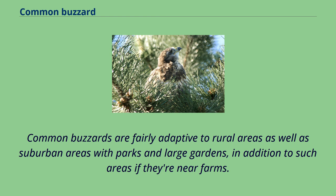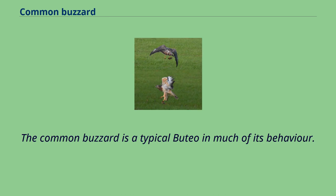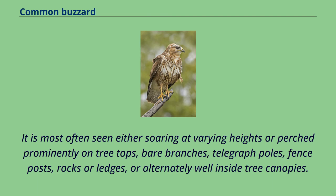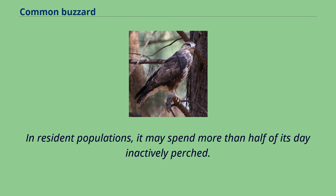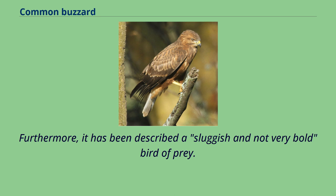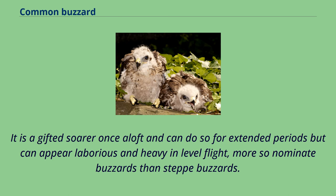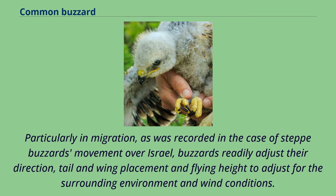Buzzards spend much of their day perched. The common buzzard is most often seen either soaring at varying heights or perched prominently on treetops, bare branches, telegraph poles, fence posts, rocks or ledges, or alternately well inside tree canopies. Buzzards will also stand and forage on the ground. In resident populations, it may spend more than half of its day inactively perched, and has been described as a sluggish and not very bold bird of prey. It is a gifted soarer once aloft and can do so for extended periods, but can appear laborious and heavy in level flight. In migration, buzzards readily adjust their direction, tail and wing placement and flying height to adjust for surrounding environment and wind conditions.